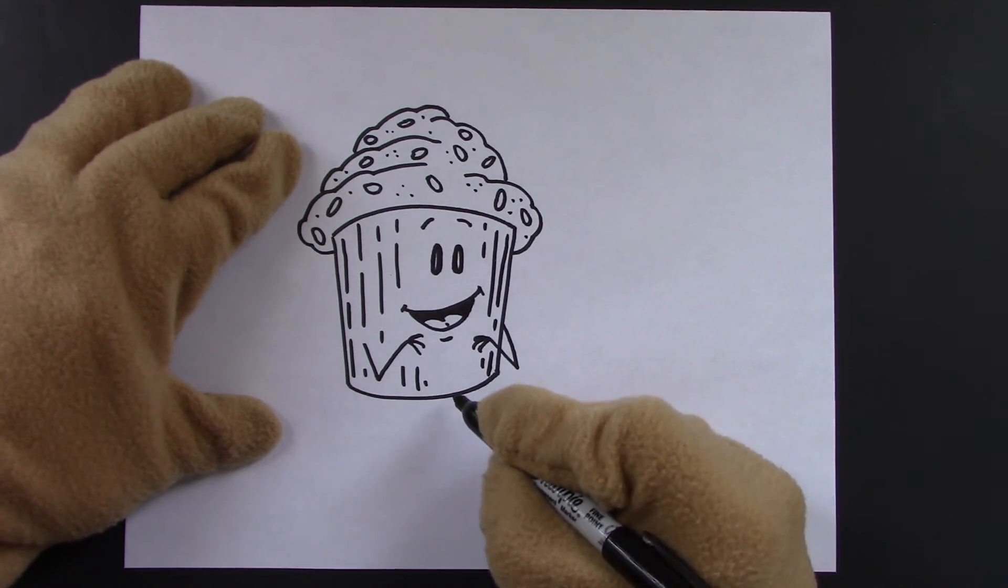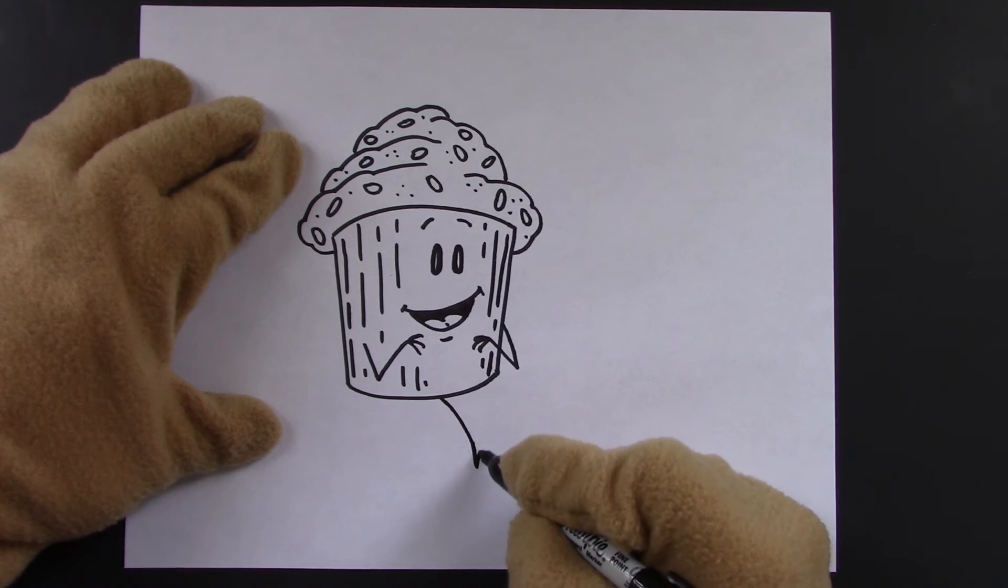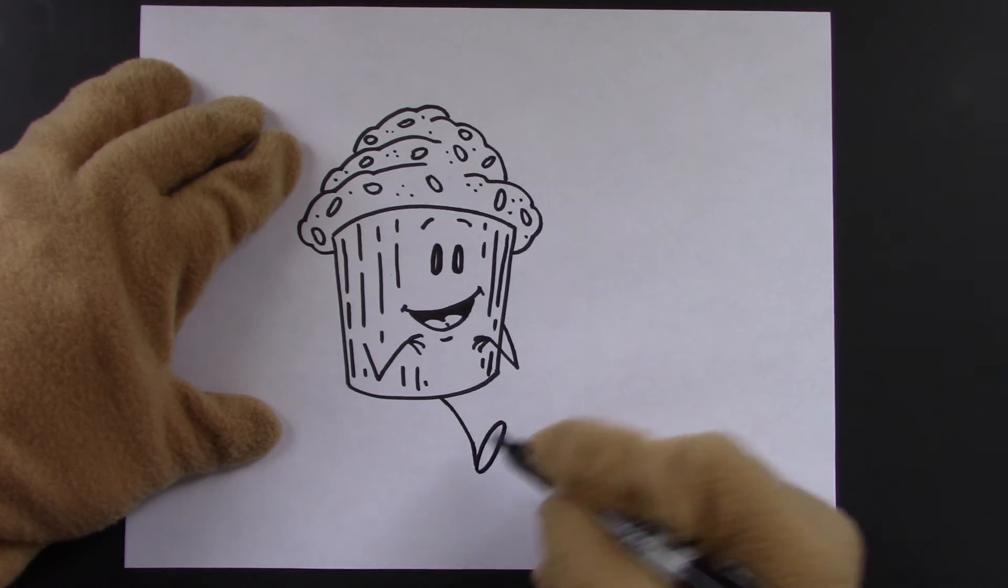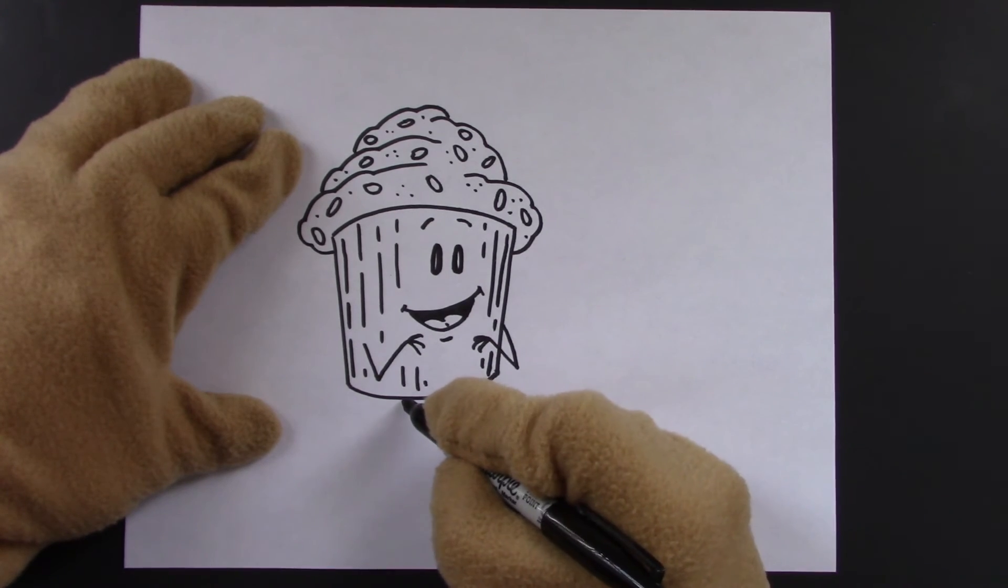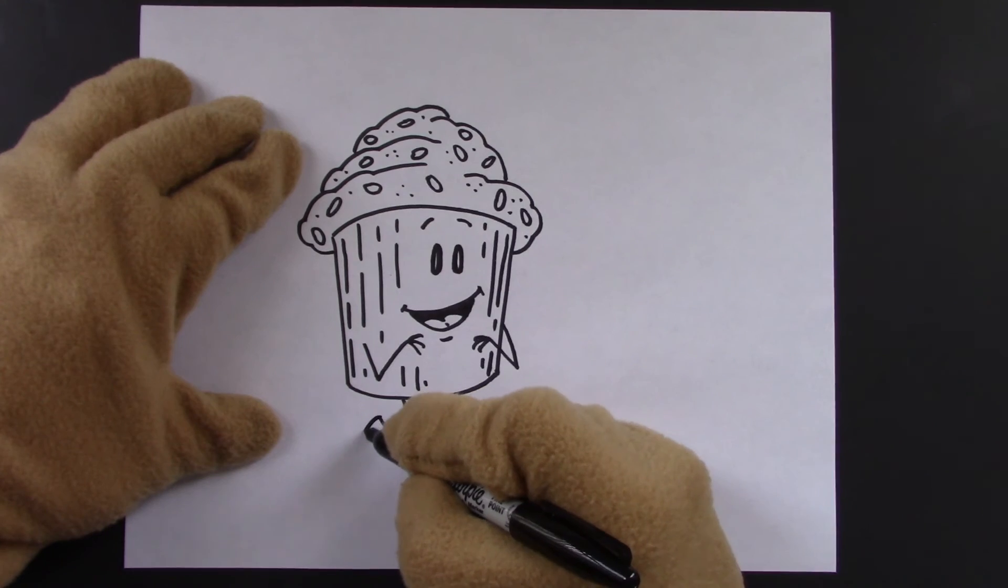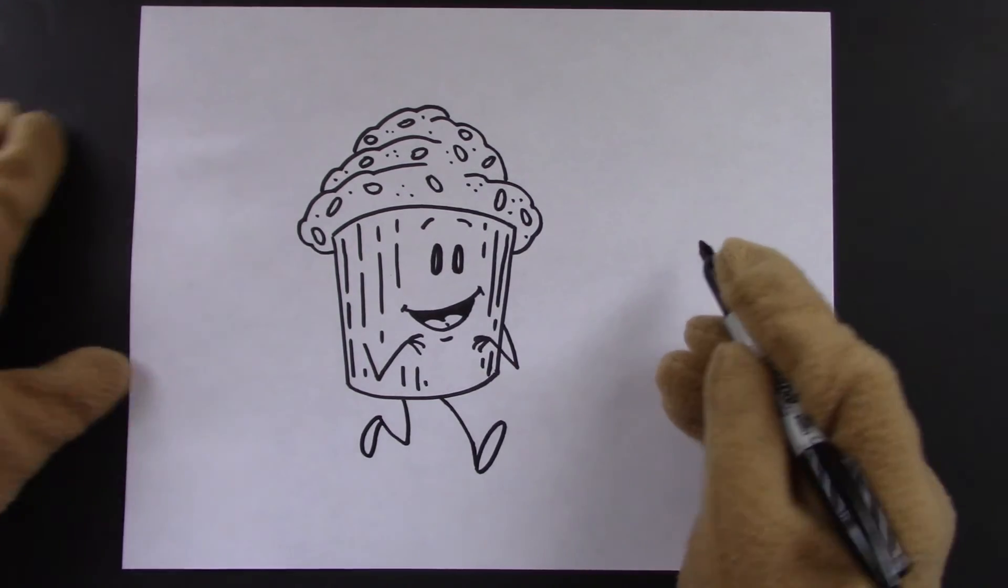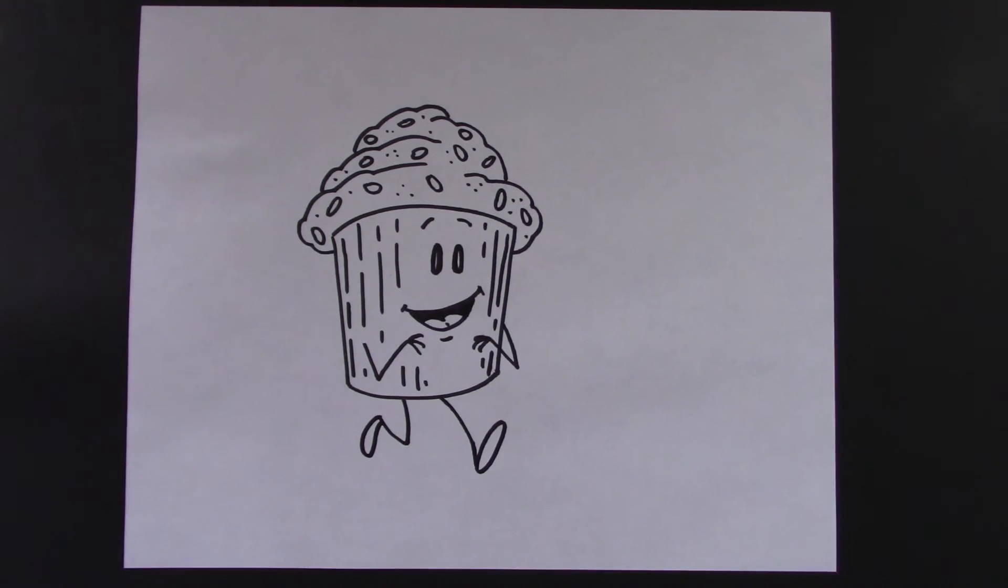Now for his feet. So he's walking. So let's make his leg curved and a nice little oval for his foot. And the back leg will go down and back up. And then the foot will hang down. There's our cupcake. Good job.